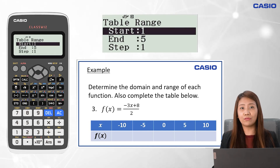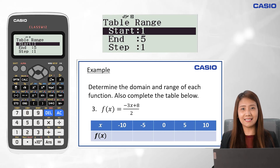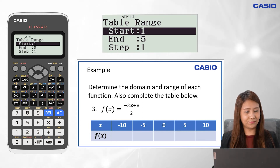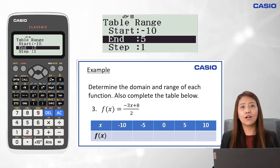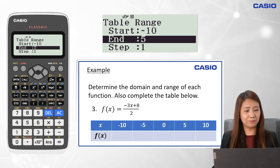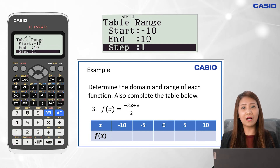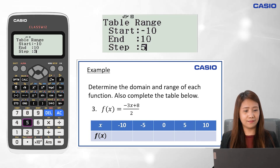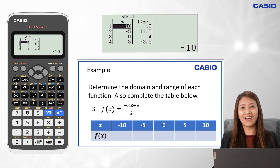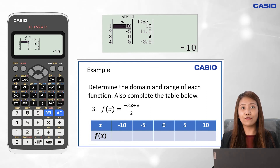For the table range, we follow the values from the given table. For start, input the first value in the table, which is negative 10, then press equal sign. For the end, input the last value in the table, which is 10, and press equal sign. Since the interval between the values of x is 5 units, then the step is 5. Input 5, then press equal sign twice, and the values of the table will appear. If x is negative 10, then f of x is 19. If negative 5, it's 23 over 2, and so on.